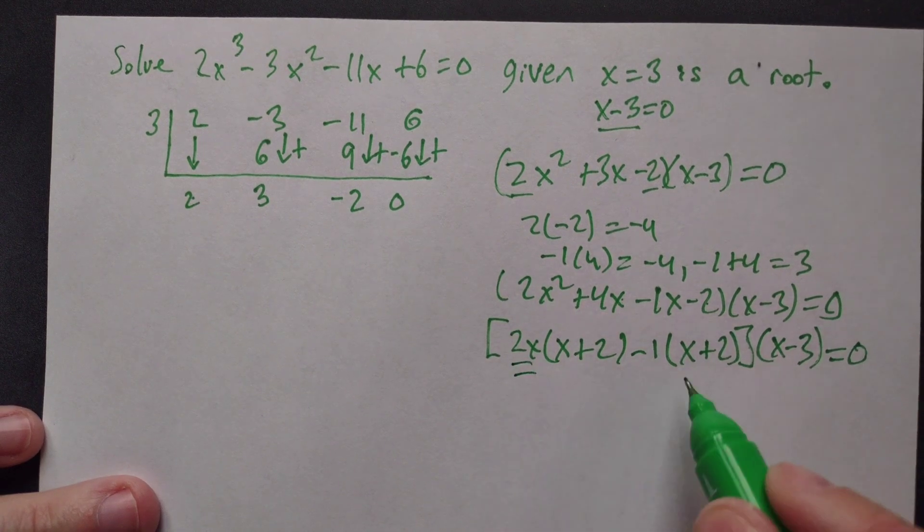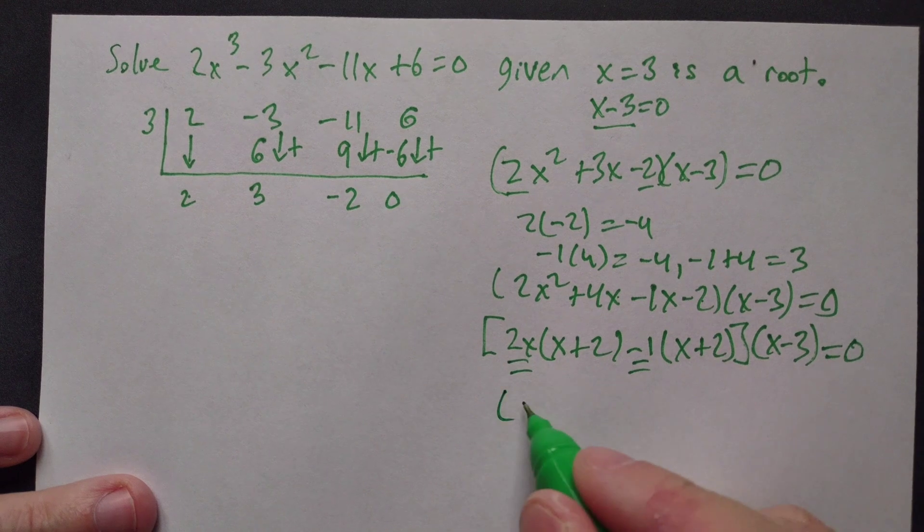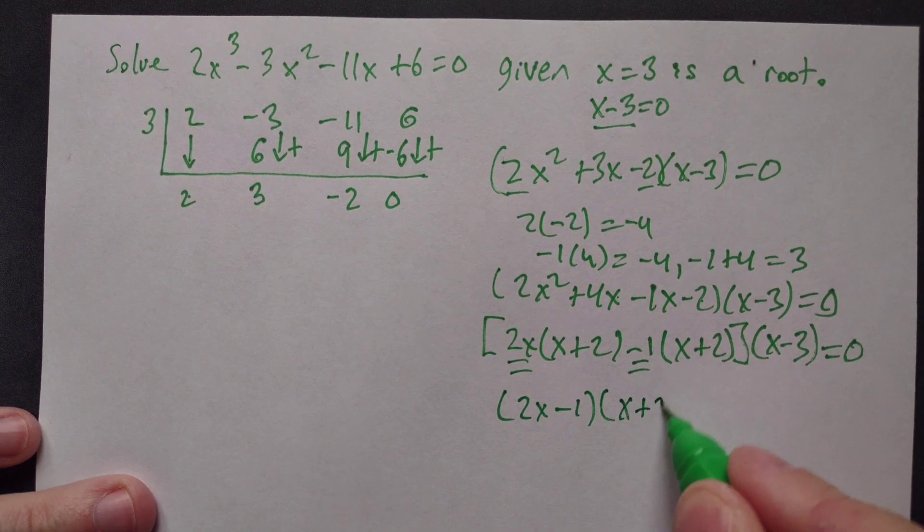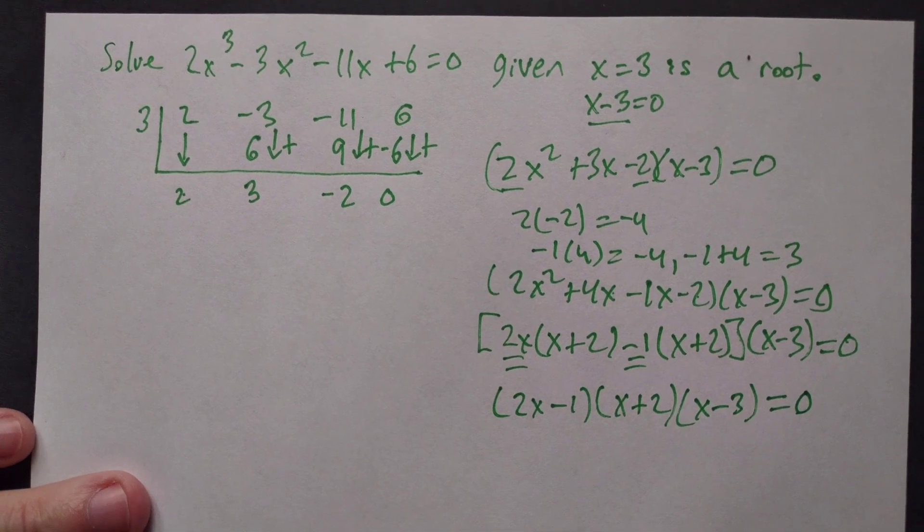Combine 2x and -1 into a single factor: (2x - 1)(x + 2)(x - 3) = 0.